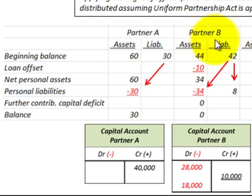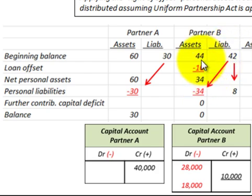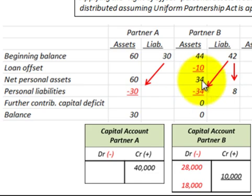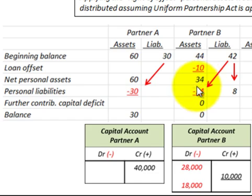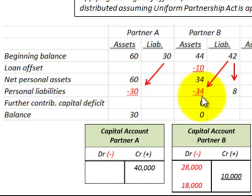Now for partner B, who has the right of offset situation: assets of $44,000 and liabilities of $42,000. We subtract the $10,000 offset on the loan against their beginning balance in assets, giving net personal assets of $34,000. We then reduce those net personal assets by $34,000 to cover liabilities, so their further contribution to any deficit is zero and they have a zero balance in assets.